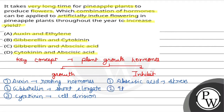The fifth hormone is ethylene, which is a gas hormone. Ethylene is the main hormone responsible for fruit ripening, abscission, senescence, seed germination, dormancy, flowering, and aging. These are the key roles of ethylene.